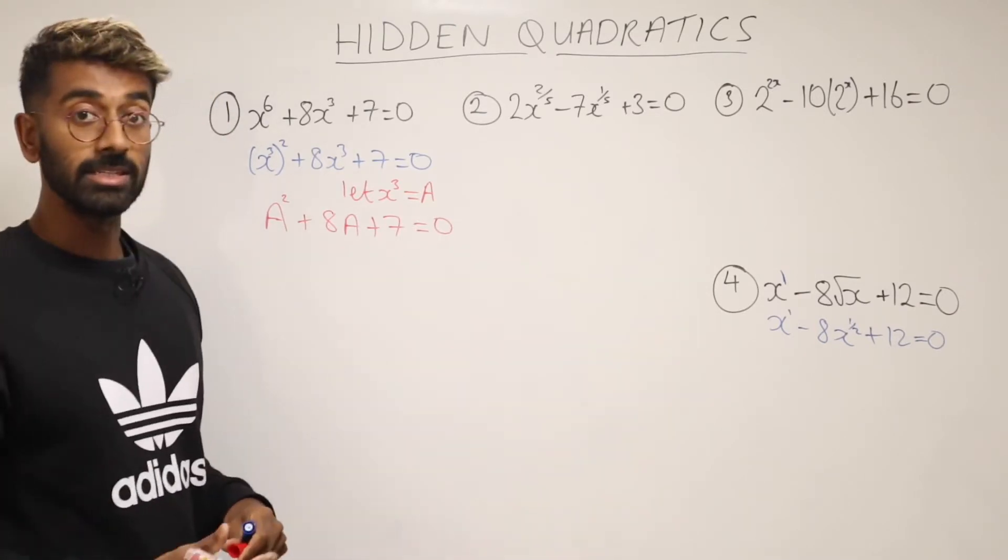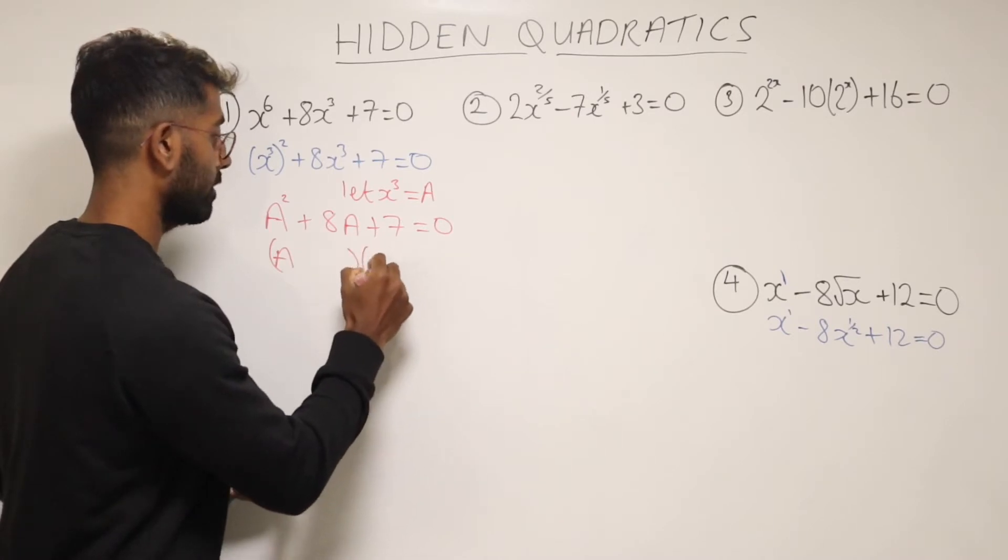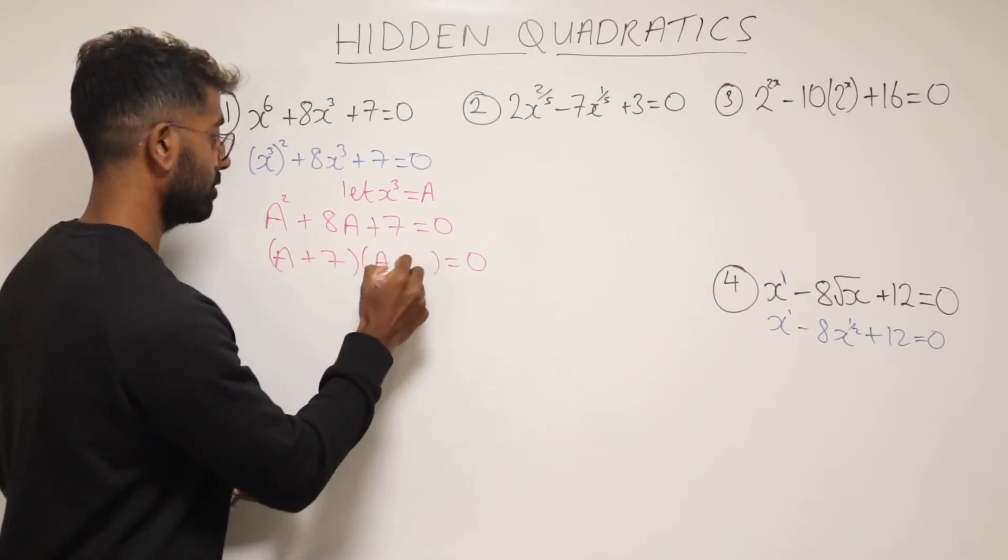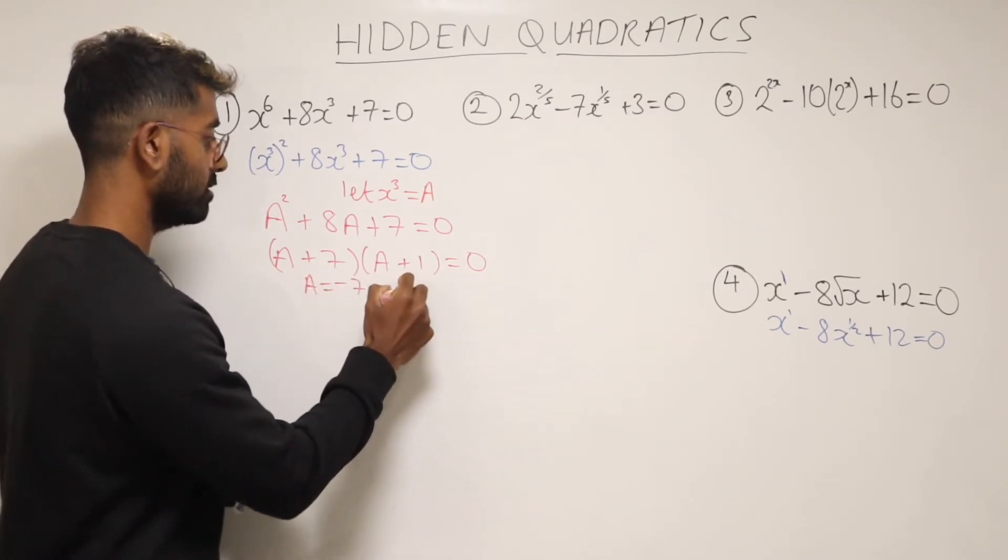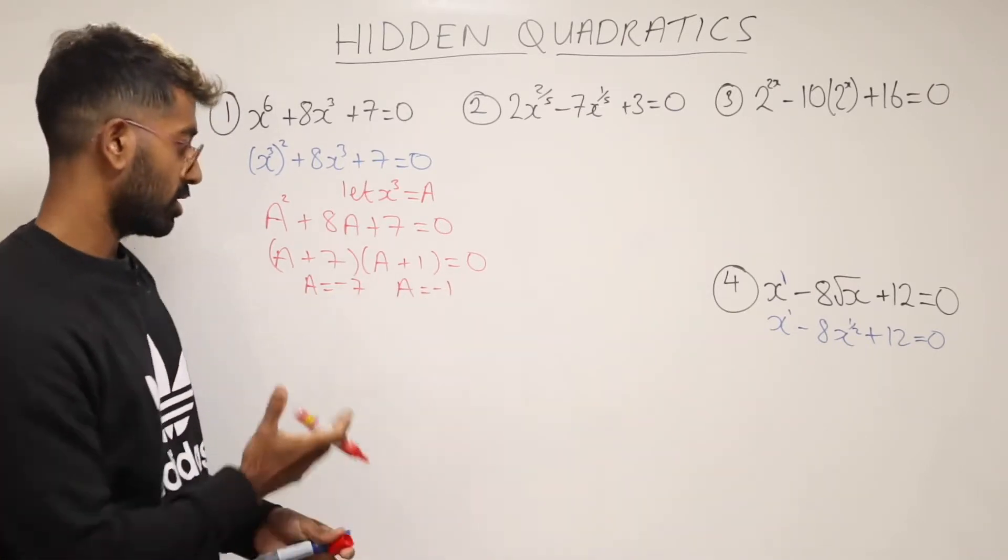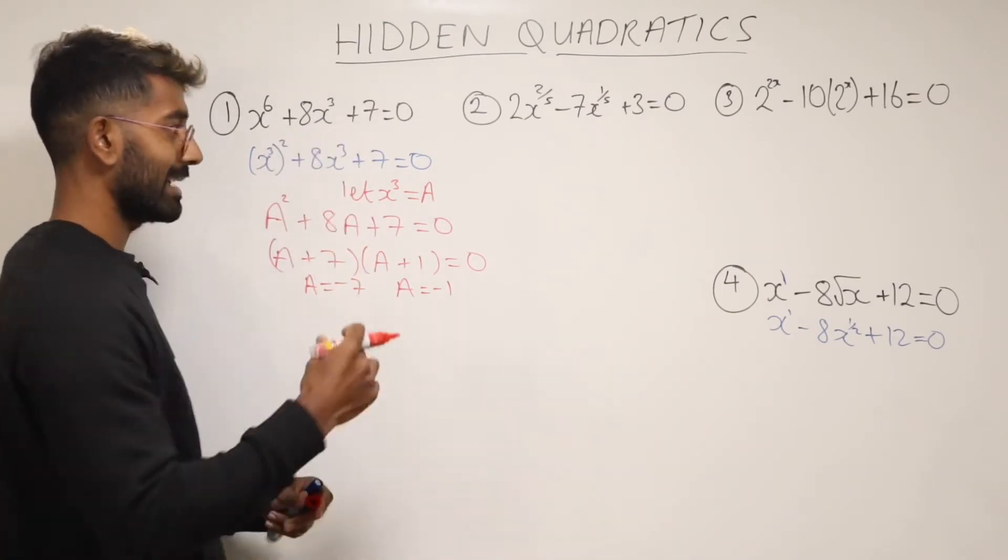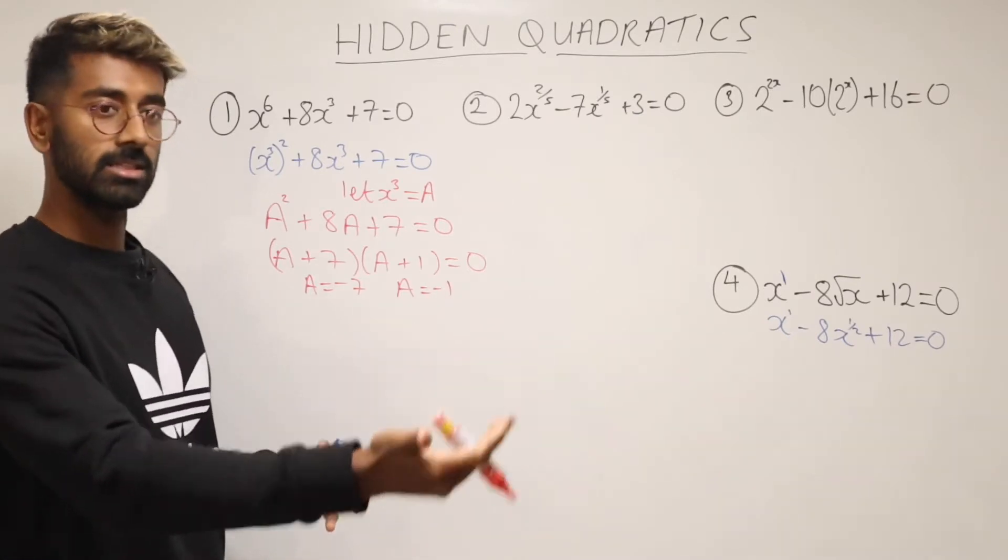And now what we've got is a quadratic. So we go and factorise it. That would be A and A and that would be plus 7 plus 1. So over here we can say A is equal to minus 7 and over here A is equal to minus 1. Now you might think it's finished. Oh, we've solved it. We've got answers. But not quite, because our original equation had x's in it.